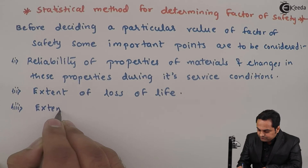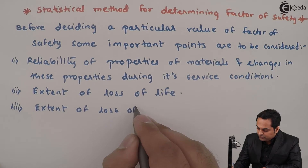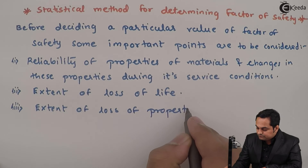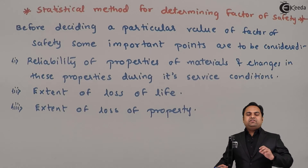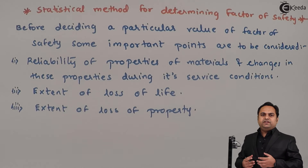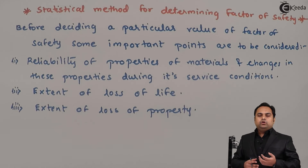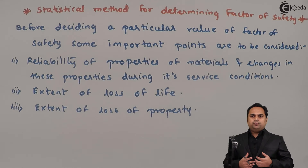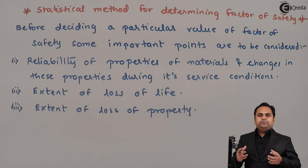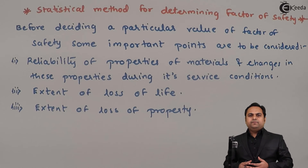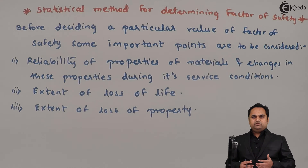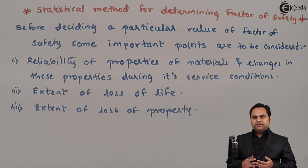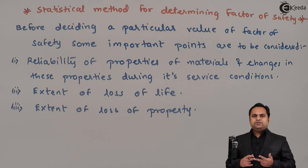The next point is the extent of loss of property. If we are designing any component that could result in loss of property — for example, a component that may explode during operation causing property damage — we have to select a high factor of safety in conditions where the extent of loss of life or property is significant.